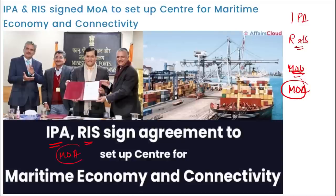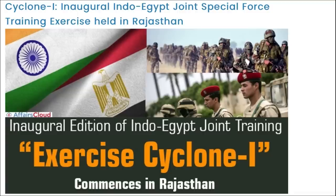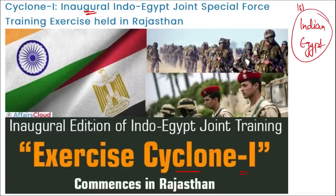Exercise Cyclone I was an inaugural Indian-Egypt joint special forces training exercise held in Rajasthan. Being the first edition, it marks the first joint exercise between the special forces of the Indian Army and the Egyptian Army. The exercise is being held in Jaisalmer, Rajasthan.